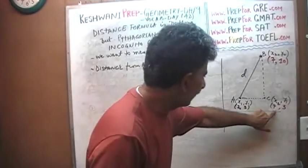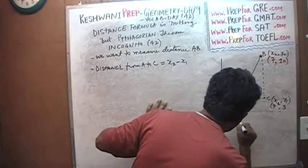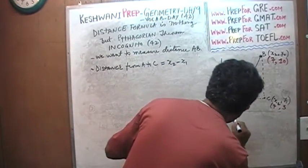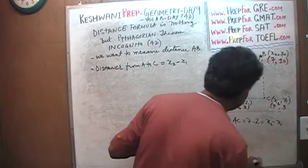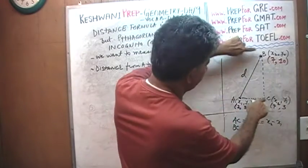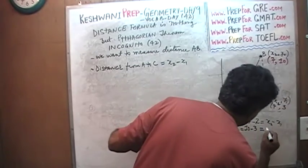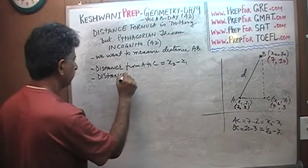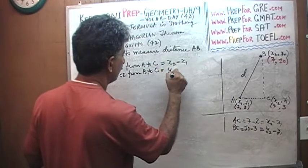So what's the distance from A to C? It is 7 minus 2, which is X2 minus X1. And what is the distance from B to C? B to C is 10 minus 3, which is Y2 minus Y1. The distance from A to C is X2 minus X1, and the distance from B to C is Y2 minus Y1.